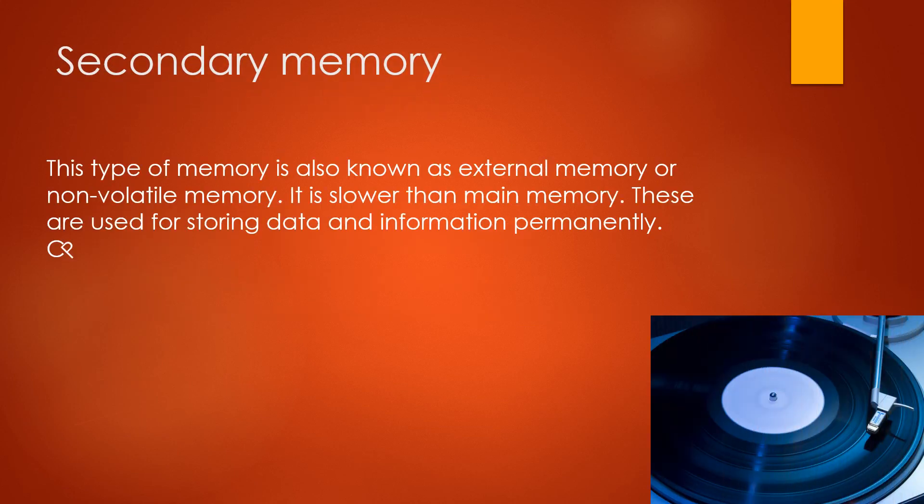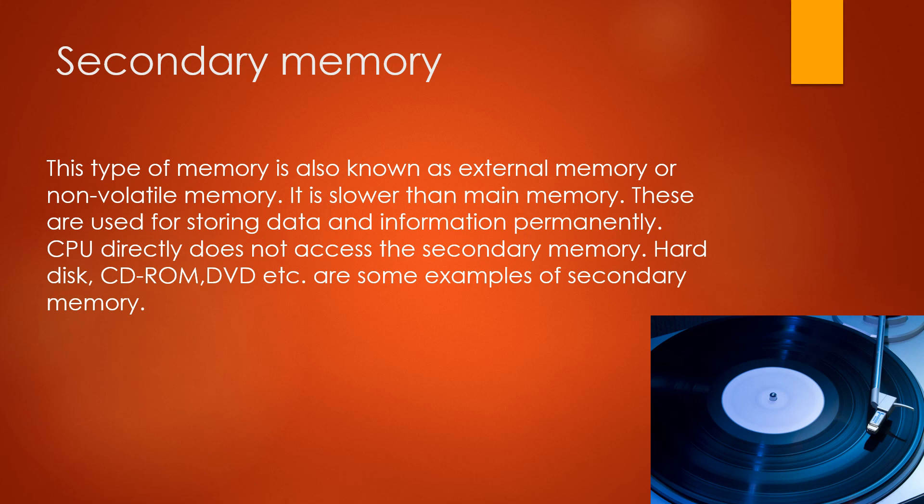Secondary memory is also known as external memory or non-volatile memory. It is slower than the main memory. These are used for storing data and information permanently. The CPU does not directly access the secondary memory. Hard disk, CD-ROM, DVD, etc. are some examples of secondary memory.